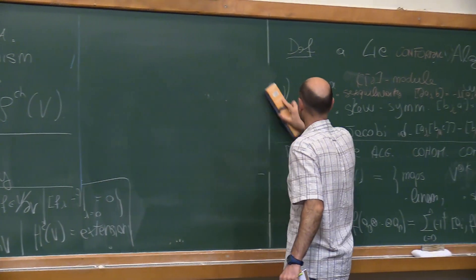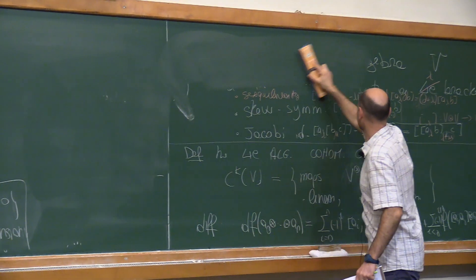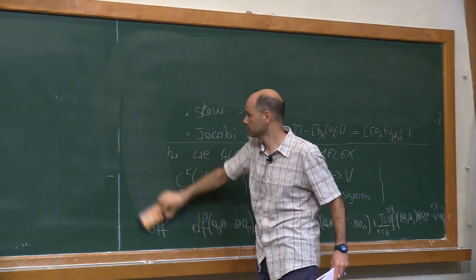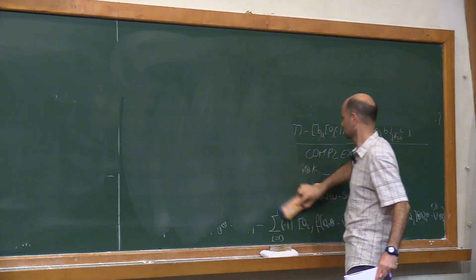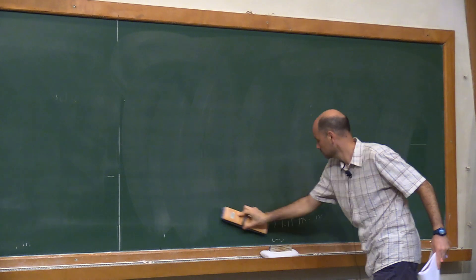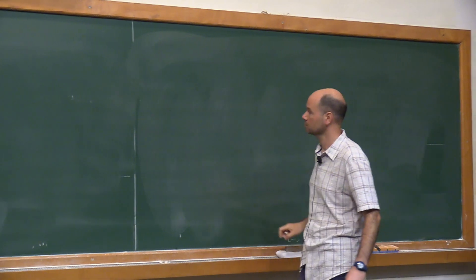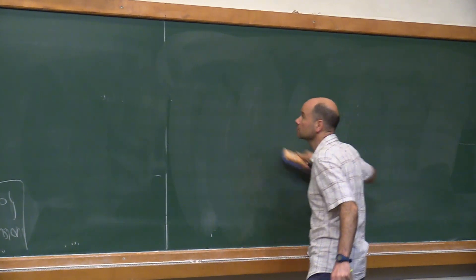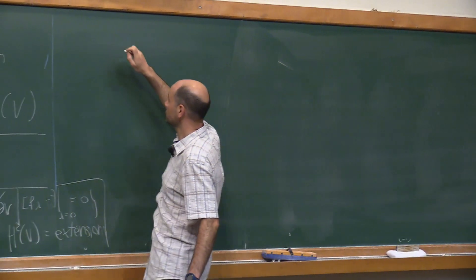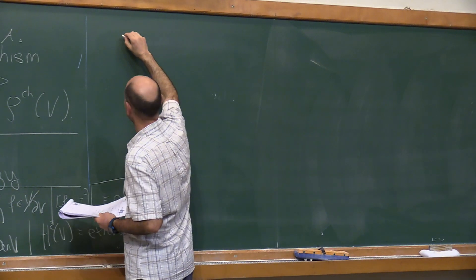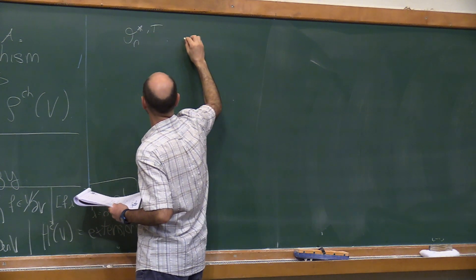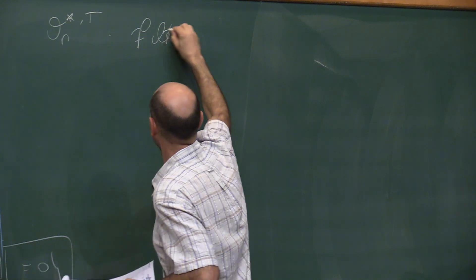To compute vertex algebra cohomology, the best approach we know is through its classical limit — Poisson vertex algebra cohomology. We want to define a filtration of the chiral operad and take the associated graded. The spaces O_N^{*T} are filtered: F^0 = O_N^T (no poles), F^1 allows poles on a single diagonal, F^2 on two diagonals, and so on.